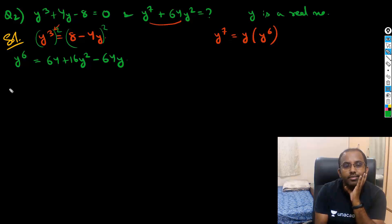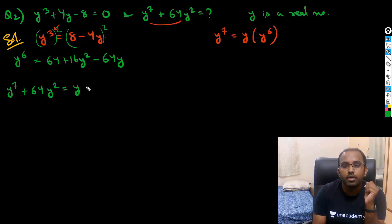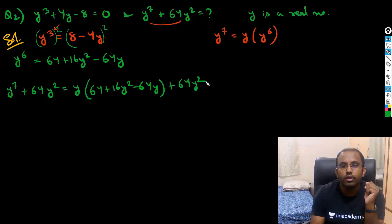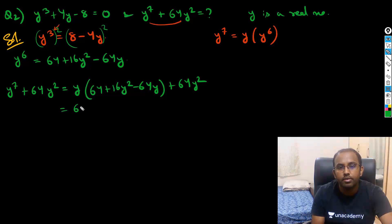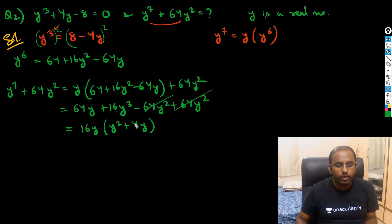Now for y⁷ + 64y²: replacing y⁷ with y · y⁶, we get y(64 + 16y² - 64y) + 64y². Expanding: 64y + 16y³ - 64y² + 64y². The two 64y² terms cancel, leaving 16y³ + 64y, and taking 16y common gives 16y(y² + 4). This reduces the equation to 16(y³ + 4y).